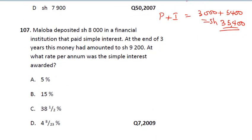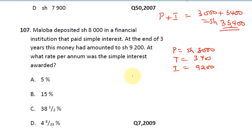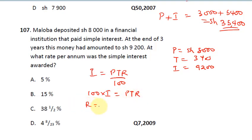The last question for the day: Malaba deposited 8,000 shillings in a financial institution that paid simple interest. At the end of 3 years this money had amounted to 9,200 shillings. At what rate per annum was the simple interest awarded? We want to find the rate. The principal is 8,000, time is 3 years, and the amount after 3 years is 9,200 shillings.